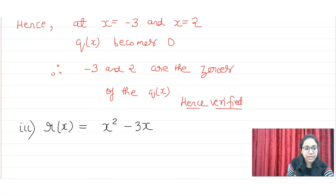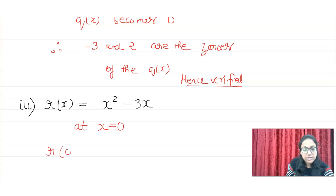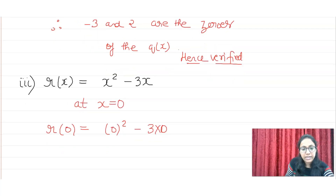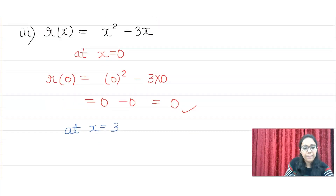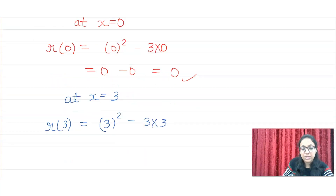So we have to show 0 and 3. First, at x = 0: R(0) = 0² - 3 × 0 = 0. For the second case, at x = 3: R(3) = 3² - 3 × 3 = 9 - 9 = 0.